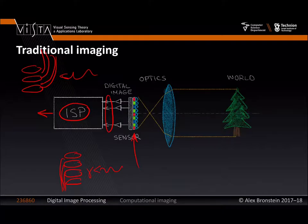But if you want to do slightly more complicated, more interesting types of imaging — to see more than what these sensors give you — then you can use combinations of different optics, different sensing, more advanced sensor designs, and a lot of digital signal processing. Let's write this mathematically.